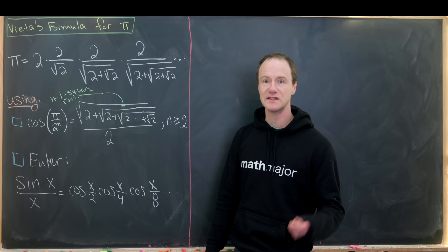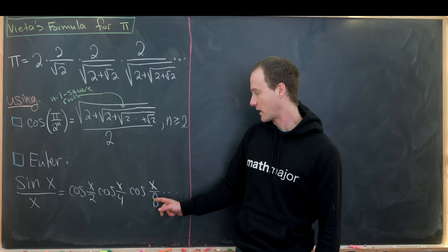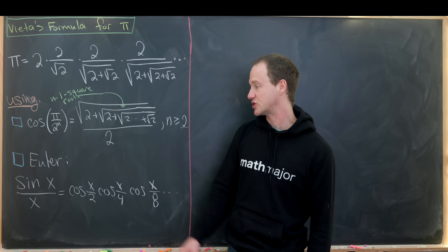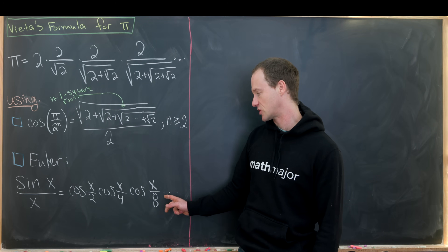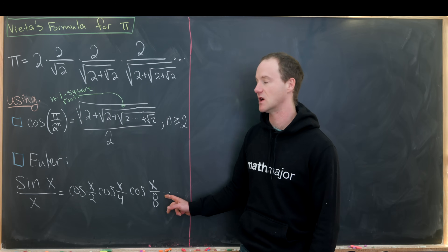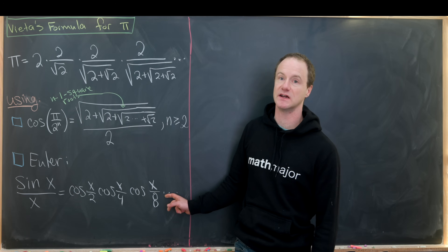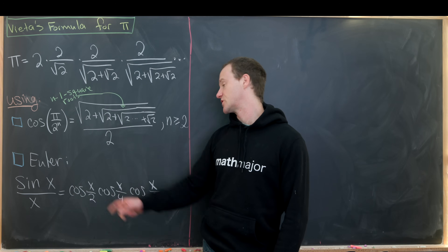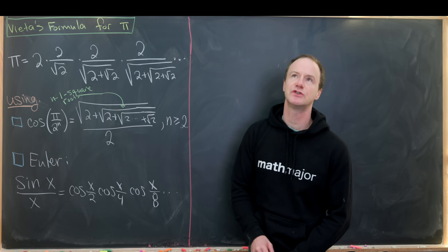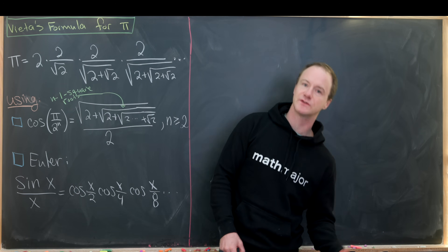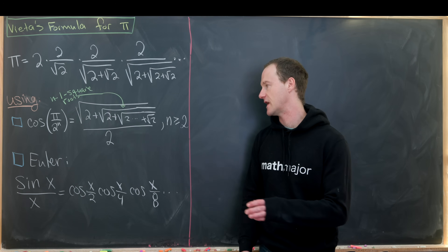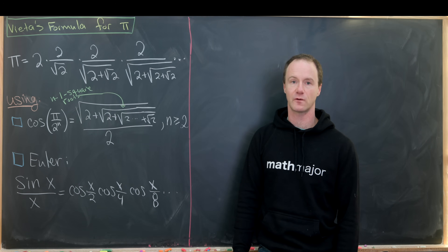The second thing we use is Euler's expansion of sine x over x in terms of a product of cosines. That's equal to cosine of x over 2, times cosine of x over 4, times cosine of x over 8, and so on and so forth.